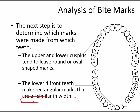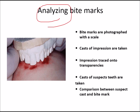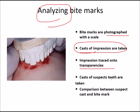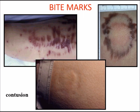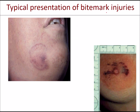To analyze bite marks: they are photographed and cast impressions are taken. The impressions are traced onto a transparency and casts of the suspected teeth are taken. The final stage is comparison between the suspect's cast and the bite mark. Saliva and blood left behind can be tested for DNA. Dental records including X-rays can provide useful information, especially when attempting to identify a victim.